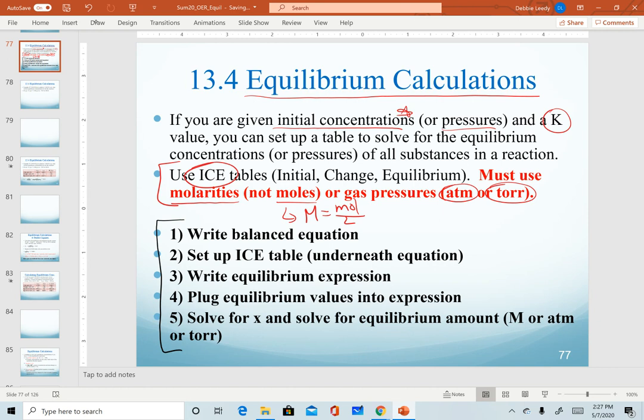So we're always going to start by writing our balanced equation, of course. We set up an ICE table underneath that. We'll be writing our equilibrium expressions and then plugging equilibrium values into that expression. Once we do that, it'll give us a math equation that allows us to solve for x, which will allow us to calculate equilibrium quantities. So refer back to this slide for the five steps to follow to solve for equilibrium quantities.